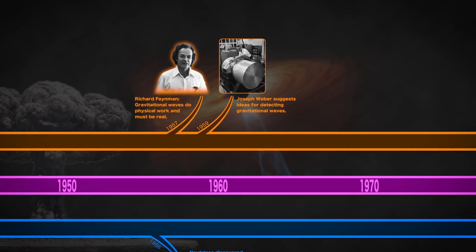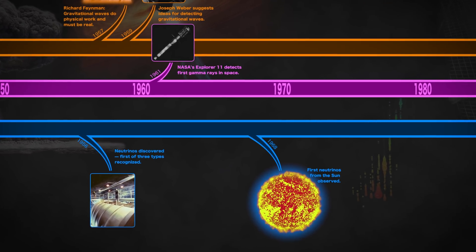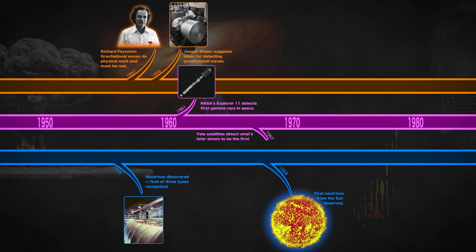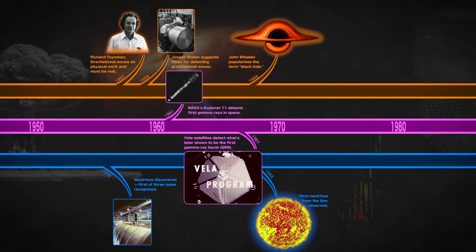The 1960s brought the first gamma rays seen in space, the first neutrinos detected from the sun's interior, and something new, later called gamma ray bursts or GRBs, caught by satellites looking for banned tests of nuclear weapons.